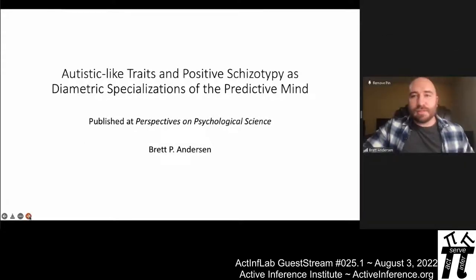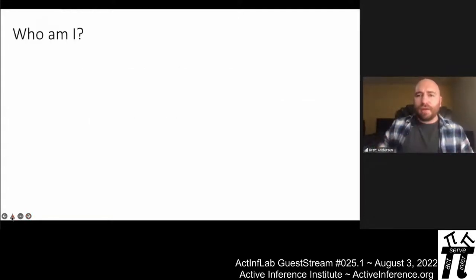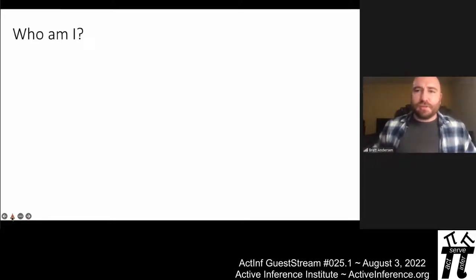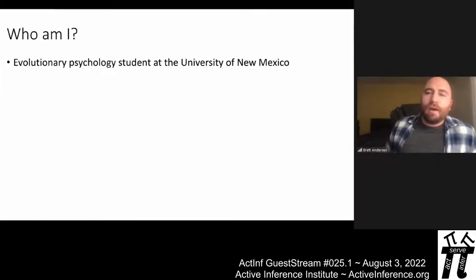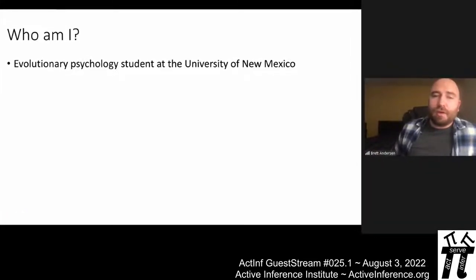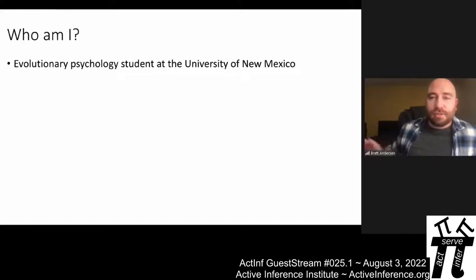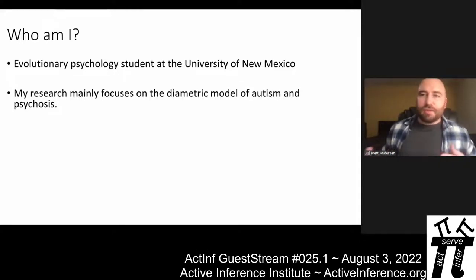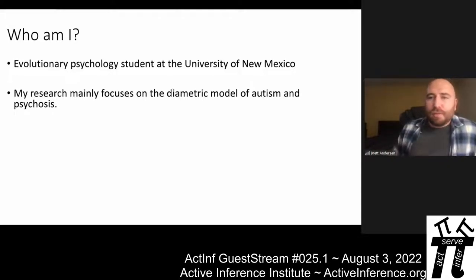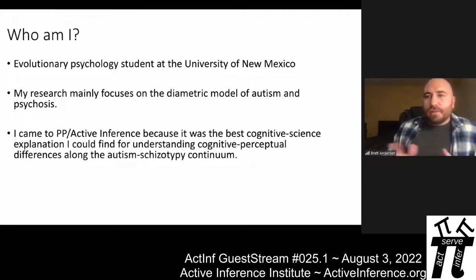This is a paper published earlier this month. Before getting into the paper, I should introduce myself. I am an evolutionary psychology PhD student at the University of New Mexico. My research mainly has to do with something called the diametric model of autism and psychosis. I am not trained in active inference or predictive processing — I came to this because I was looking for a theory that could explain variation along the autism-schizotypy continuum.